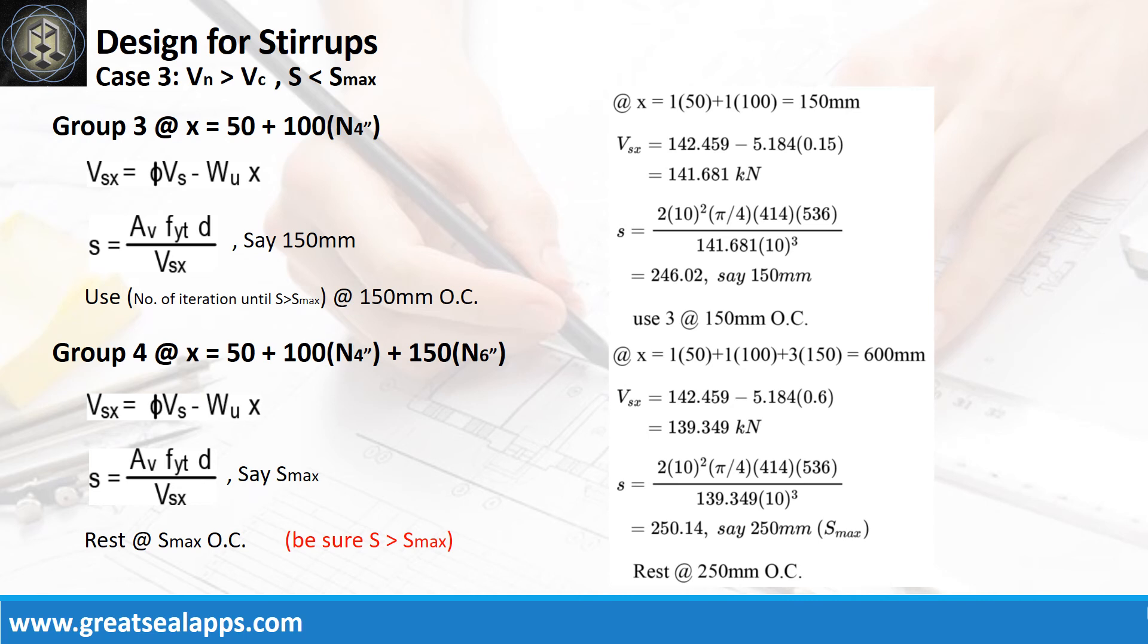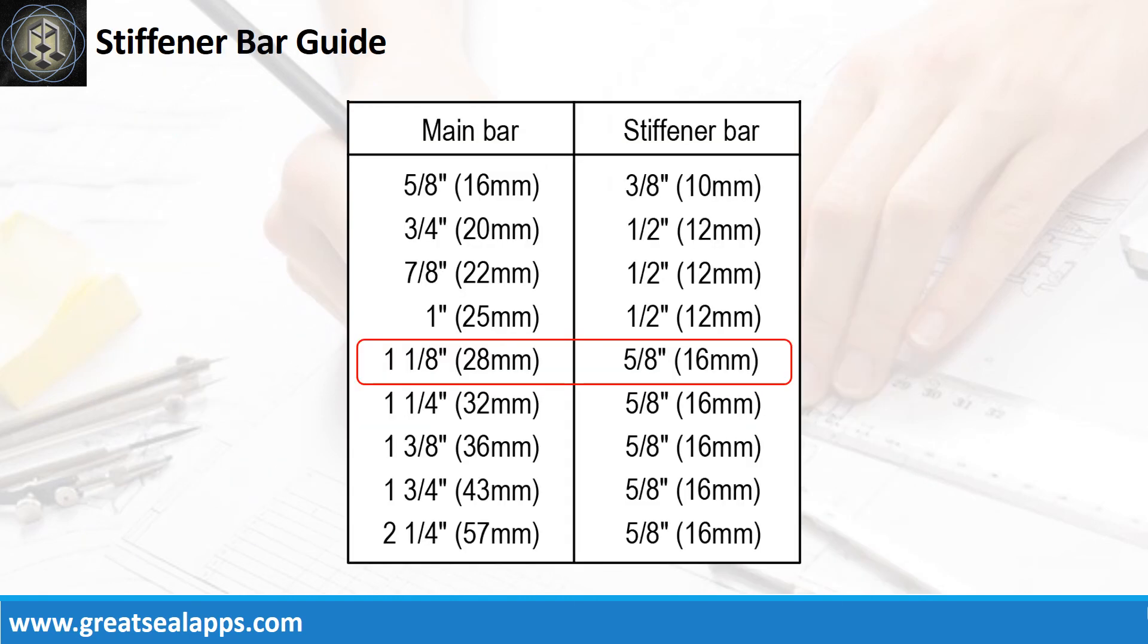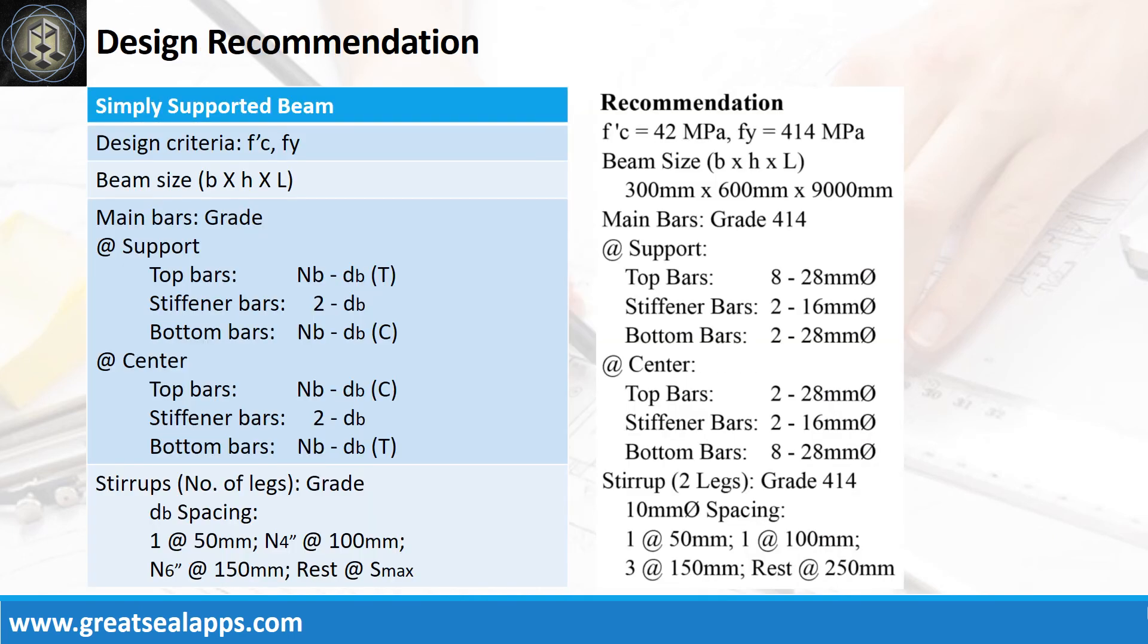For group 4, at x equals 600 mm, the web strength is 139.349 kN with spacing at 250.14 mm. Use rest at 250 mm. For 28 mm main bars, use 16 mm stiffener bars. Design recommendation as follows.